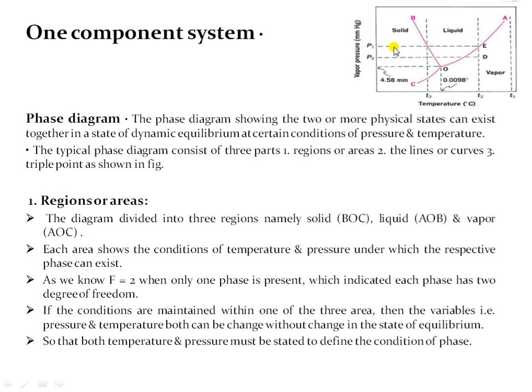Looking at a particular pressure and temperature, you will get your system in solid, liquid or vapor phase. Points present within an area will give you degrees of freedom equal to two. That is why we can say that this system is bi-variant. If conditions are maintained within one of the three areas, then pressure and temperature both can be changed without changing the state of equilibrium, so both temperature and pressure must be stated to define the condition of your phase.